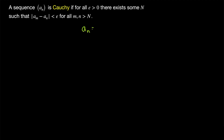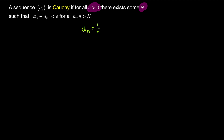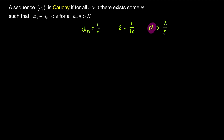Consider the sequence 1 over n — a very simple sequence that we know converges to 0. This is, in fact, a Cauchy sequence. For any epsilon greater than 0, there exists some number big N so that any two terms of this sequence after the big N-th term are within epsilon of each other. Maybe you set epsilon to be equal to 1/10. I can assure you, as long as we take big N greater than 2 over epsilon, then we should be good, as long as we consider terms of the sequence past the big N-th term.